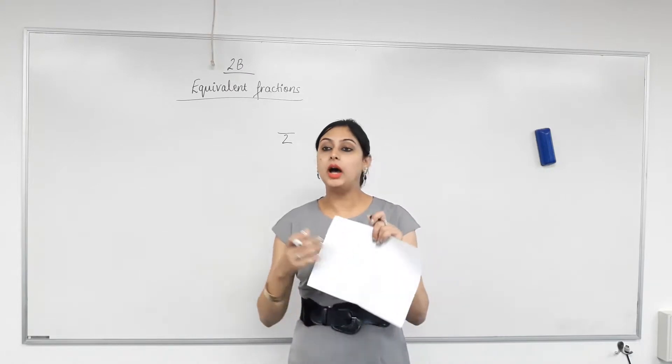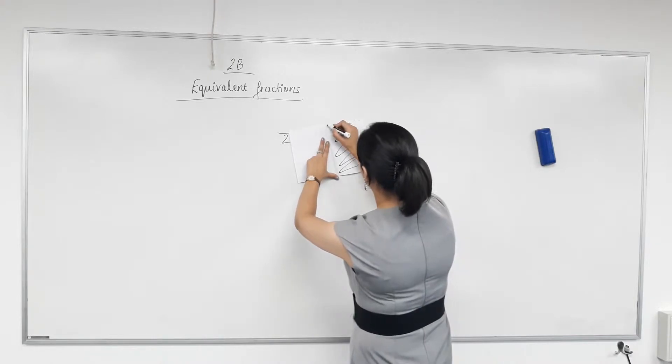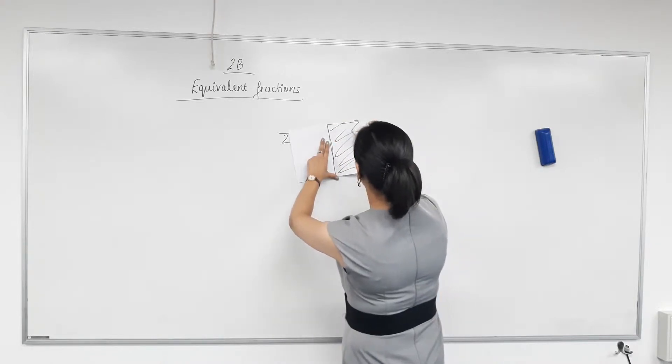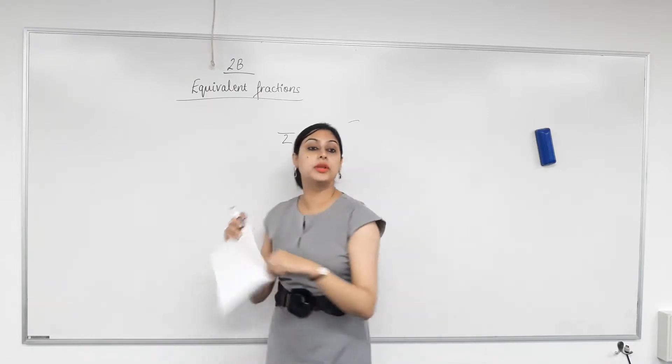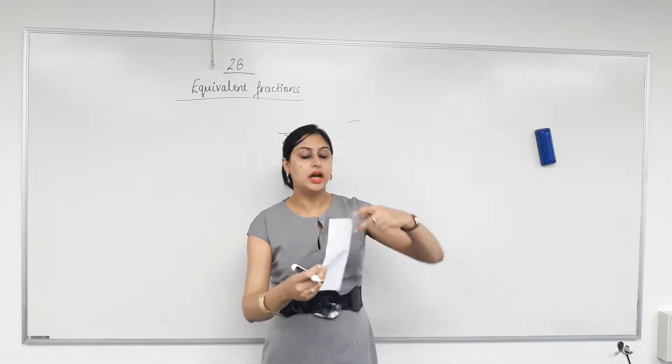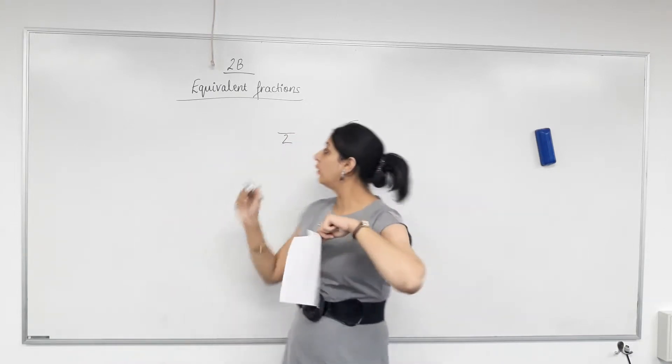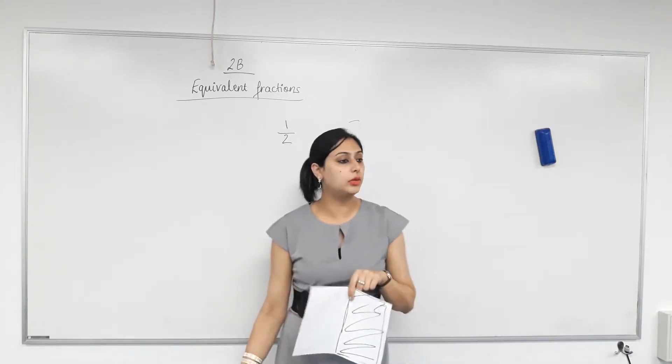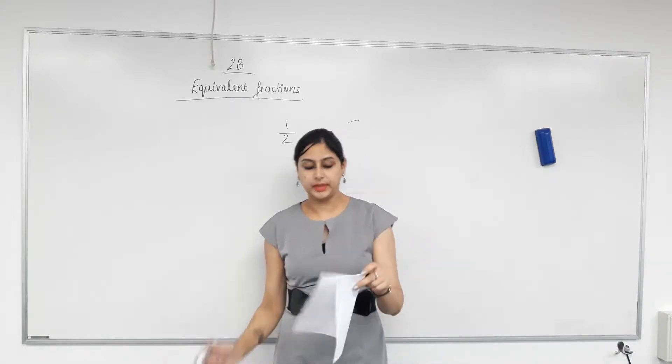So is that right? So if I was to shade this, I've shaded one side. What fraction of the paper have I shaded out of the two equal parts? One half. Haven't I shaded one of the equal parts? Yes. Do we all agree with that? Yes.